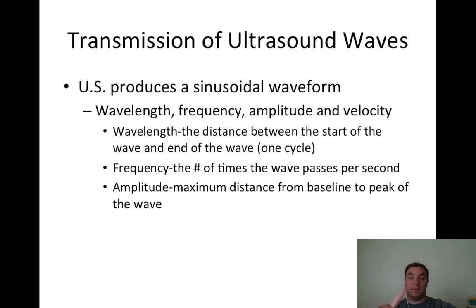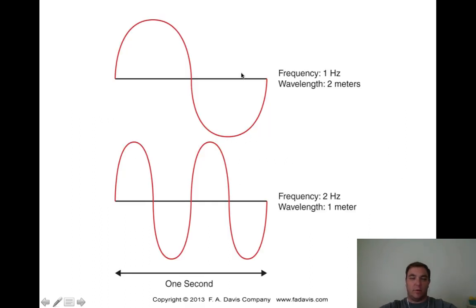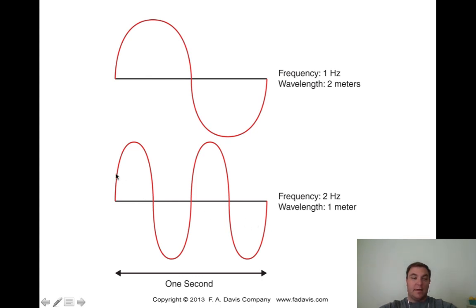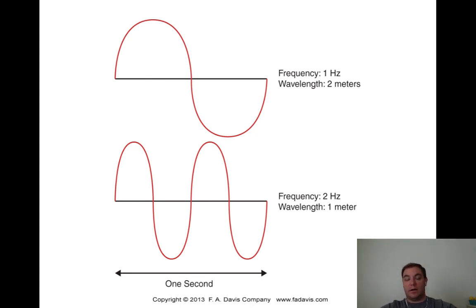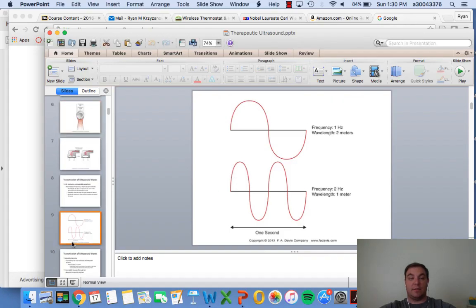So looking at examples: a wavelength of two meters at one hertz means one complete wave per second. The bottom example has completed two waves in one second - that's two hertz. This becomes important when we talk about one megahertz versus three megahertz and the heat generated within the tissues.